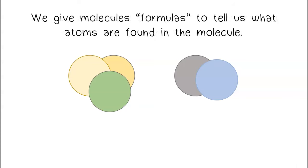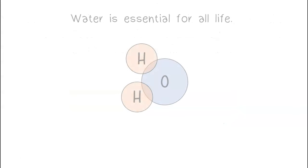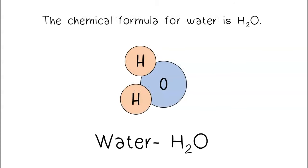We give molecules formulas to tell us what atoms are found in the molecule. The chemical formula of a molecule tells us the number of atoms in the molecule as well as the type of atoms in the molecule.